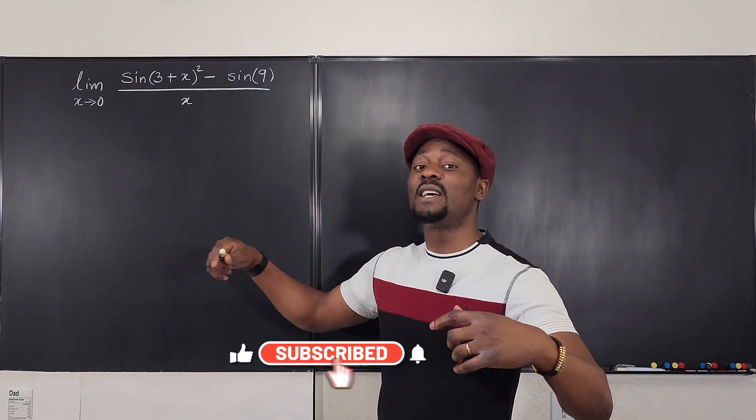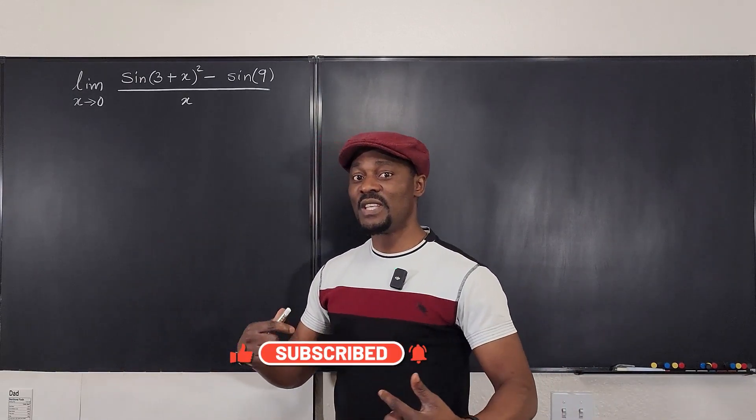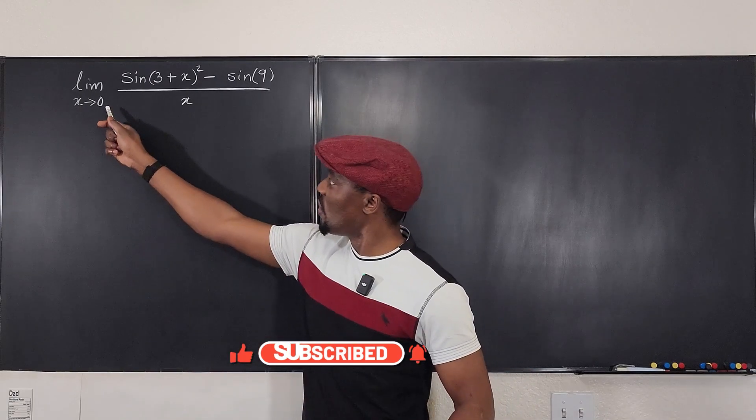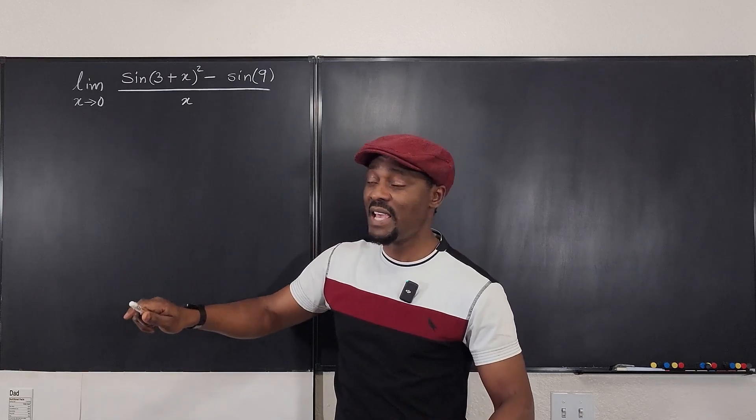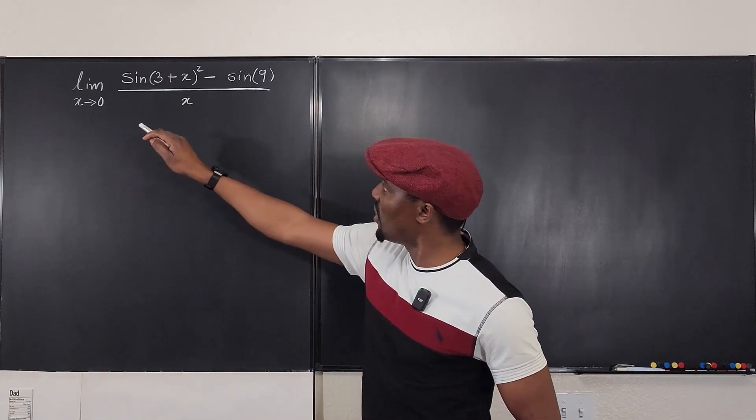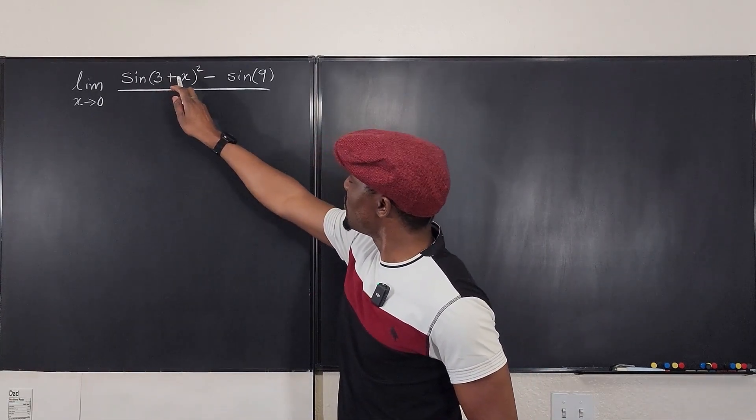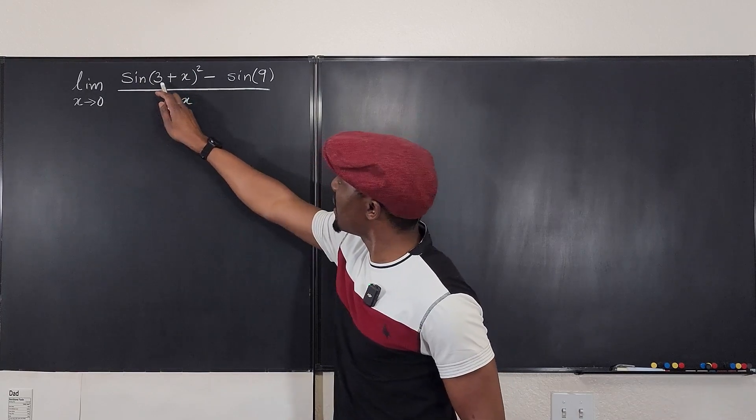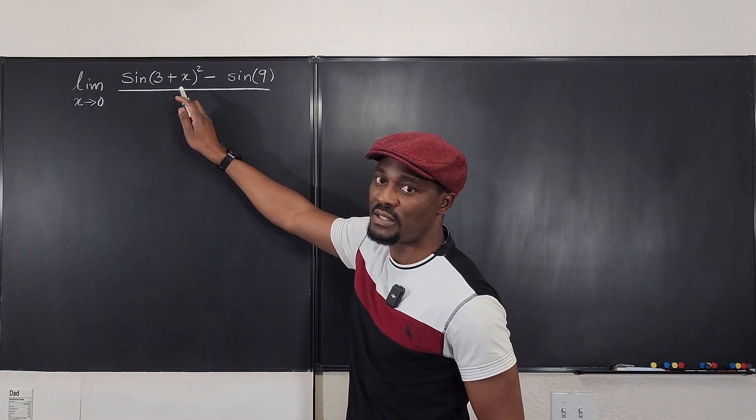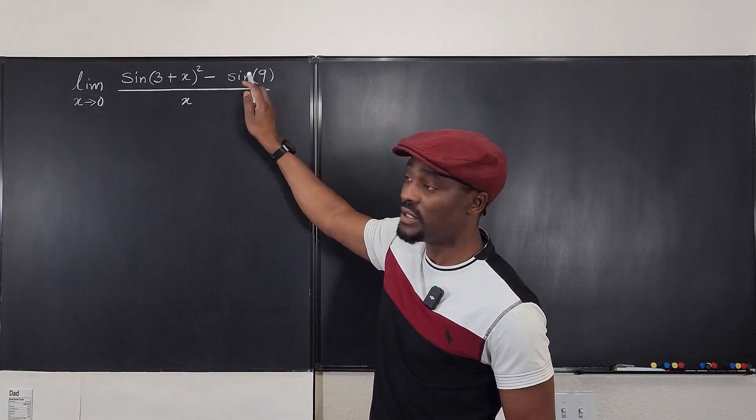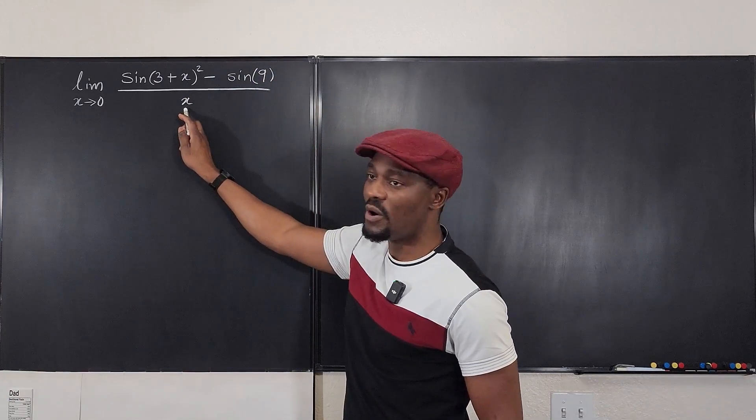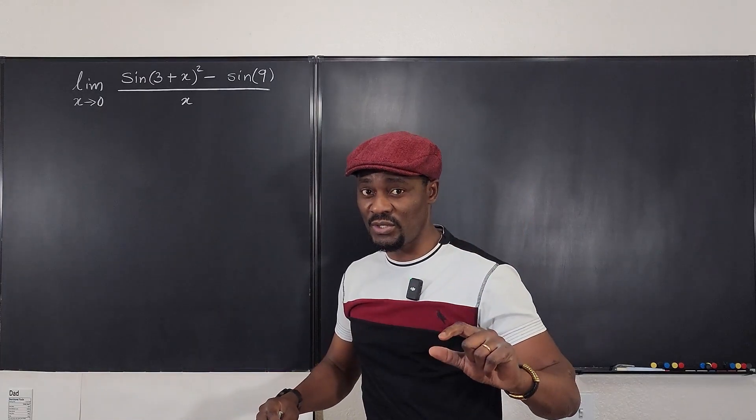Now remember, as I often say when you take limits, if where you're going is a finite number, the first move you want to make is plug in this number. So if you plug in this number here and you have zero here, this is going to be sine three squared, which gives us sine nine minus sine nine. That gives us zero on top. And this will be zero. So you have a zero over zero situation.